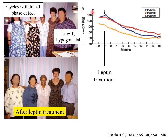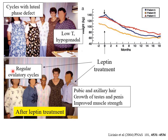Looking at their weight over months of leptin treatment, they all rapidly lose enormous amounts of weight with continued treatment. And not only that, they resume fertility: the two women start going through regular ovulatory cycles, and the man shows all the signs of having gone through puberty — pubic and axillary hair growth, growth of his testes and penis, and increased muscle mass.